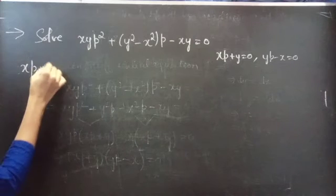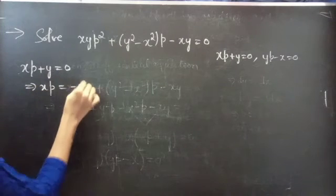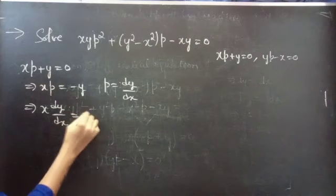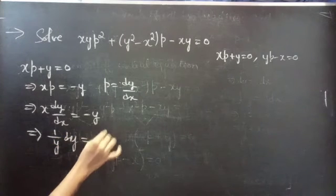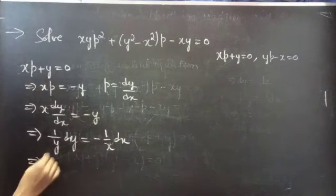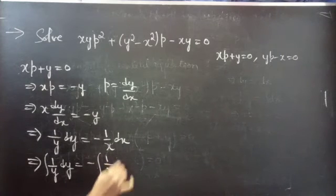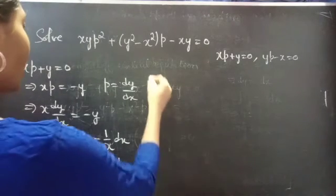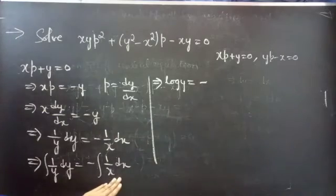Firstly, consider x·p + y = 0. We can rewrite it as x·p = -y. Since p = dy/dx, then x·(dy/dx) = -y, so dy/y = -dx/x. Since the variables are separable, we can integrate both sides: ∫(1/y)dy = -∫(1/x)dx. Since ∫(1/y)dy = log y, then log y = -log x.